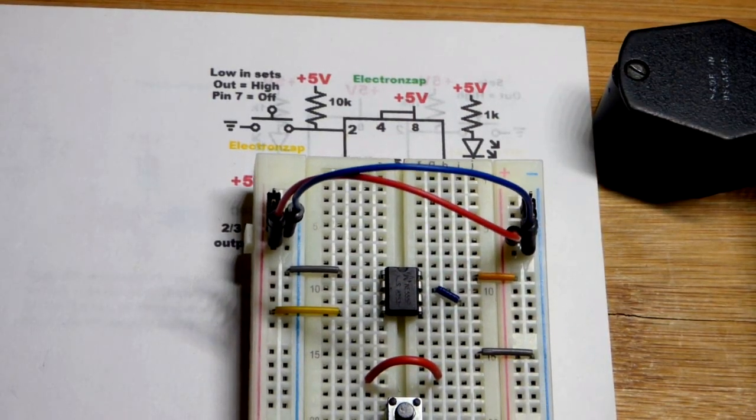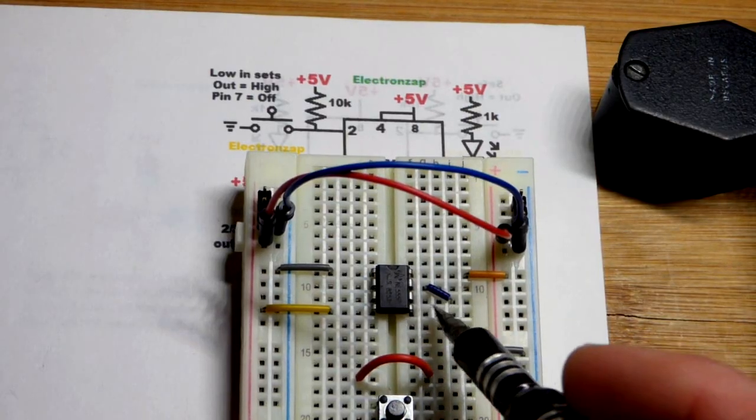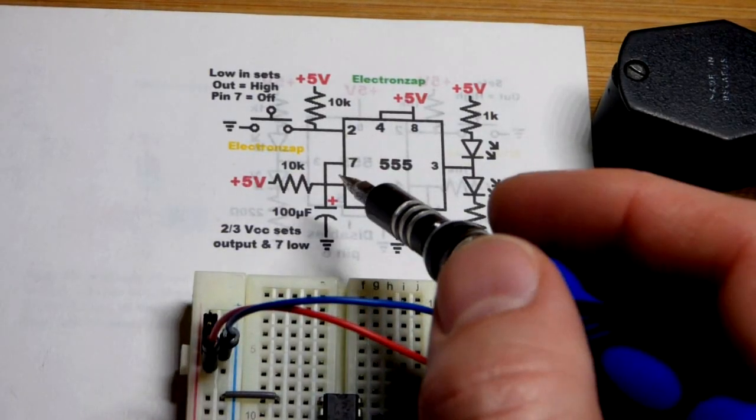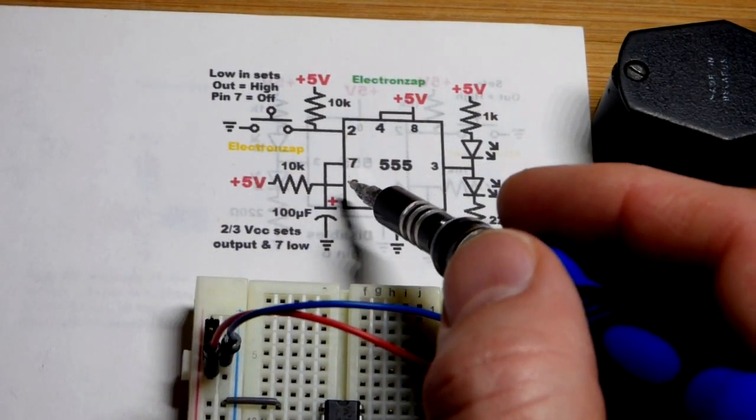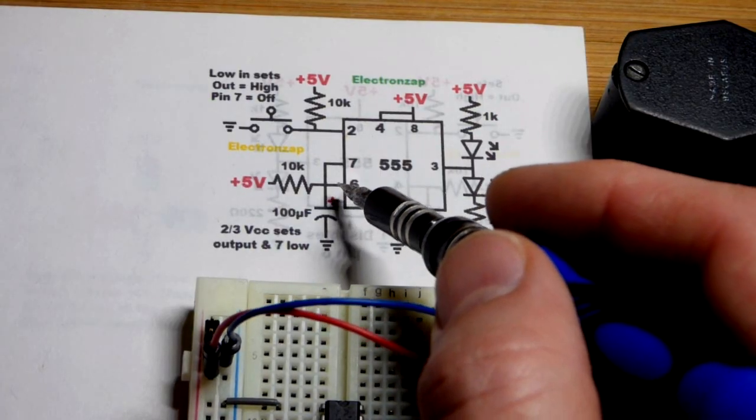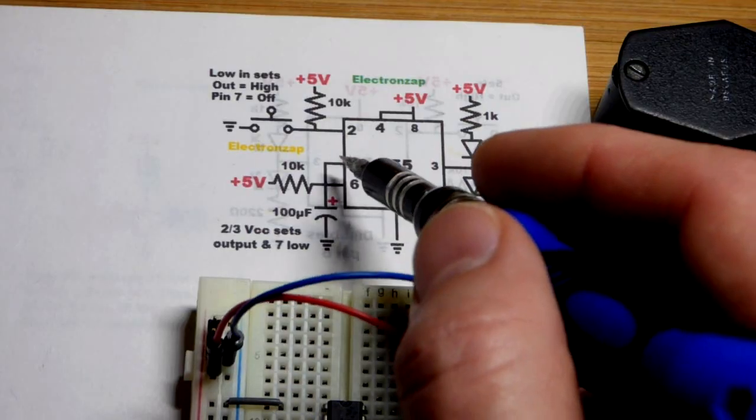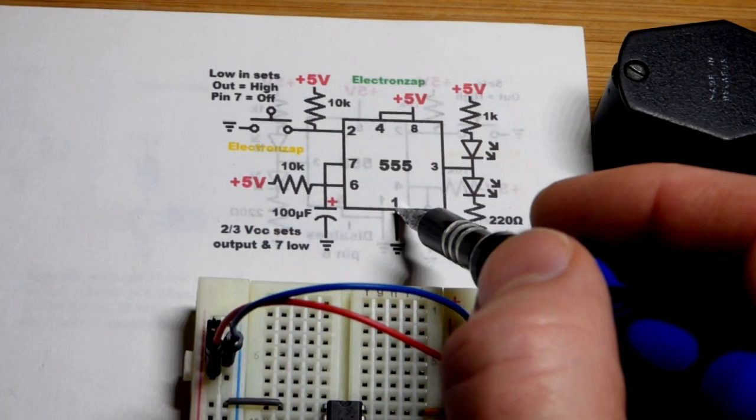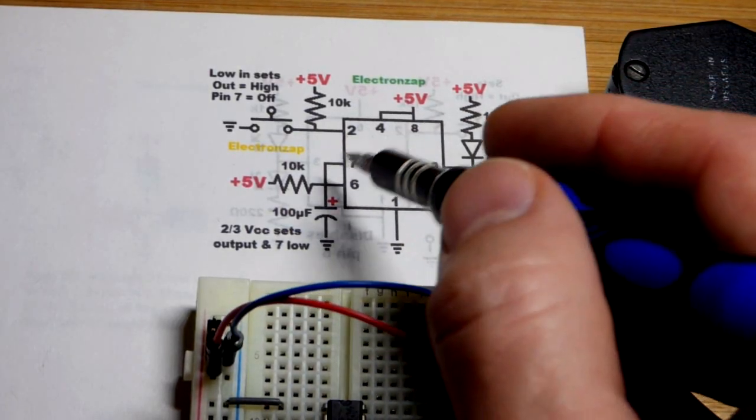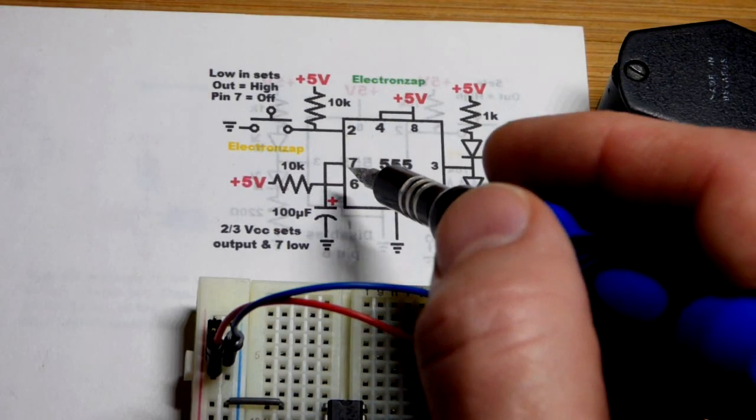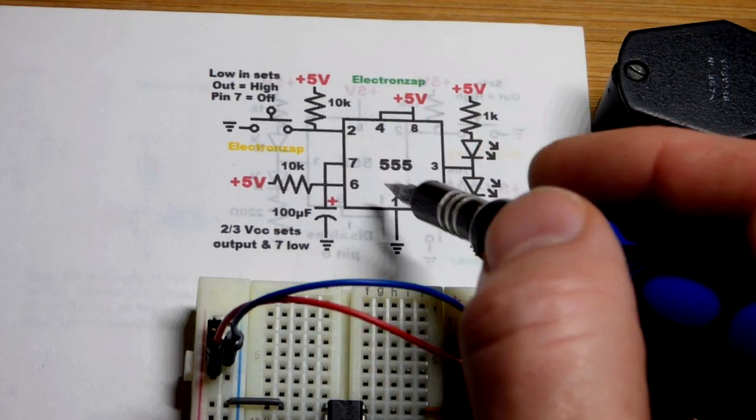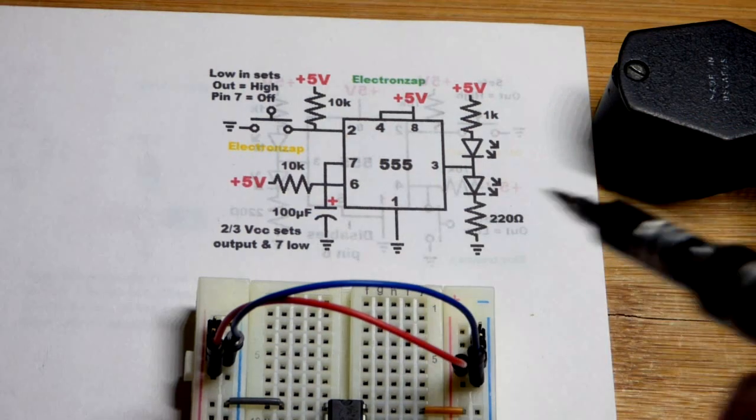But in any case, we disabled it, put it in the positive supply, we don't have to worry about that. So that's the jumpers there. Then we got this one right there, we're tying pin seven and pin six together. So that's a direct connection. What that means is that when the output goes low, pin seven also connects to ground.